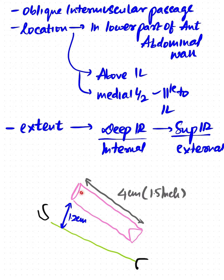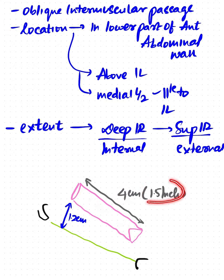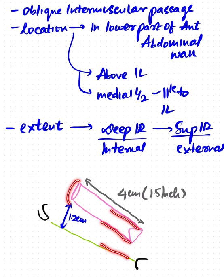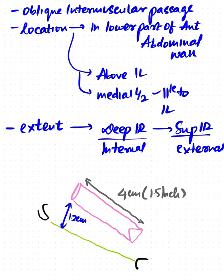The length of the inguinal canal is four centimeters, or approximately 1.5 inches. The deep inguinal ring is present 1.2 centimeters above the mid-inguinal point.